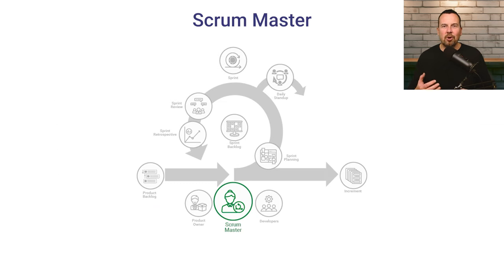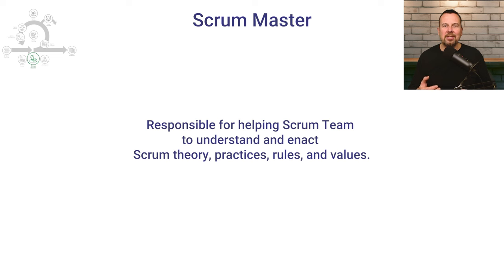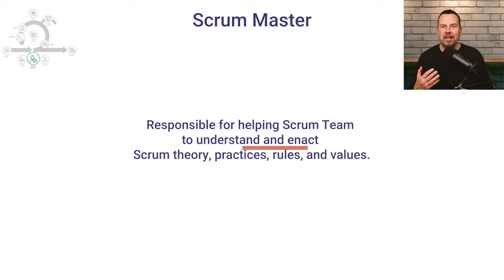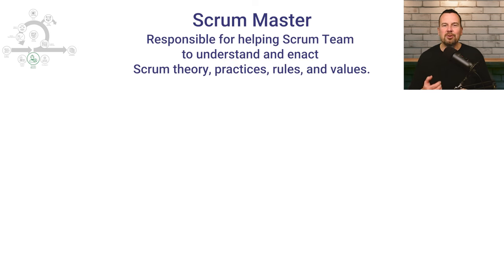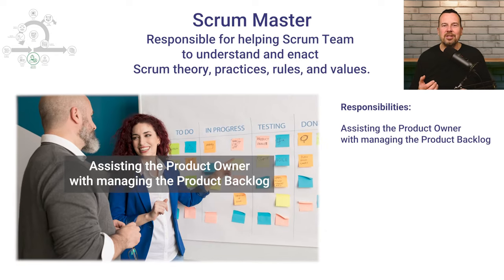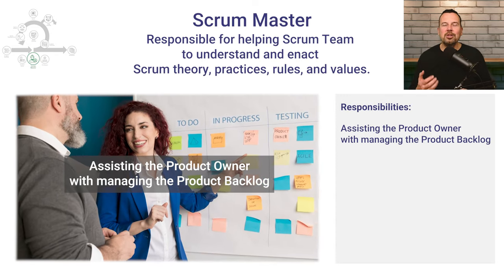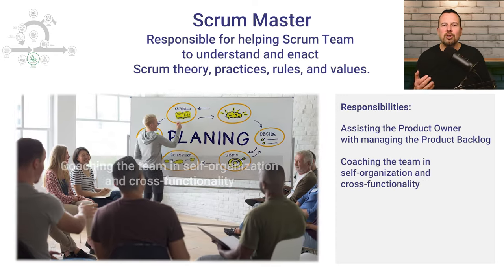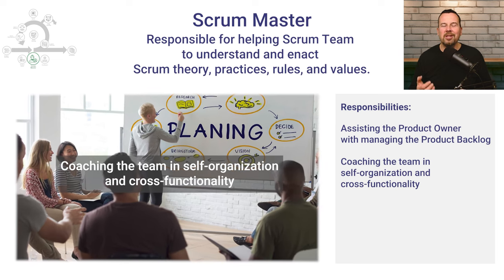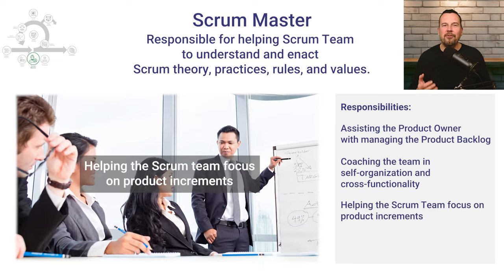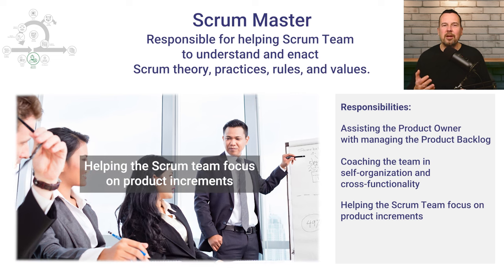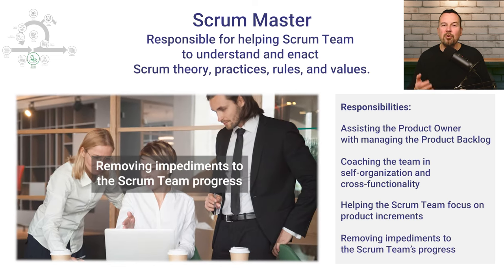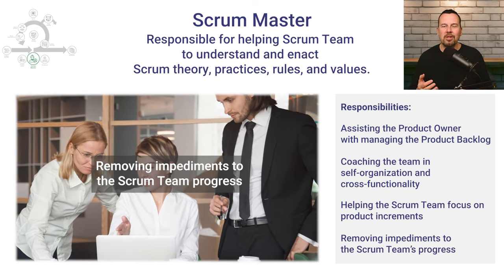The next role is the Scrum master, and the Scrum master acts as a servant leader and coach for the Scrum team. It helps the team to understand and enact Scrum theory, practices, rules, and values. The Scrum master is responsible for assisting the product owner while managing the product backlog, coaching the team in self-organization and cross-functionality, and helping the Scrum team focus on creating high-value product increments and removing impediments to the Scrum team's progress.